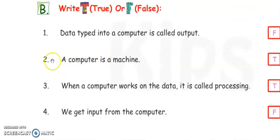Now move on to exercise B. Write T for true or F for false. Which sentence is correct? Write T in front of that, and if it is wrong, it is false, write F. Number one: Data typed into a computer is called output. When we enter something, it is input, not output. So it is wrong sentence, so you should write here F for false.